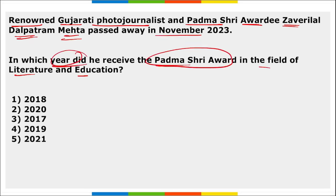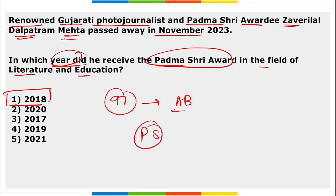Renowned Gujarati photojournalist and Padma Shri awardee Zavirilal Dalpatram Mehta passed away at age 97 in Ahmedabad, Gujarat. He received the Padma Shri in the field of Literature and Education in 2018.